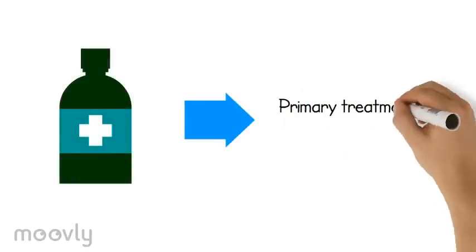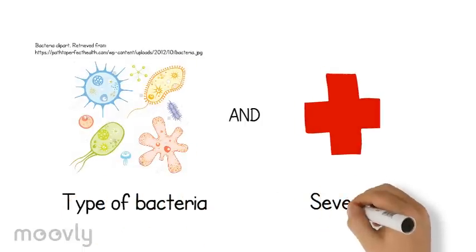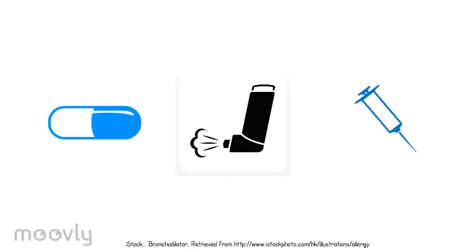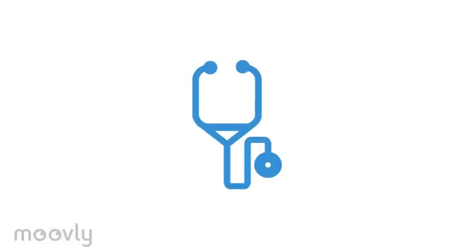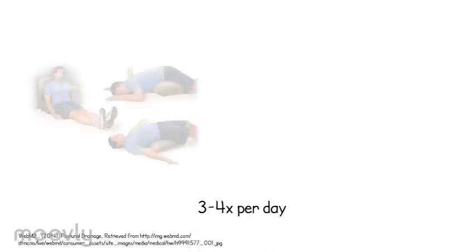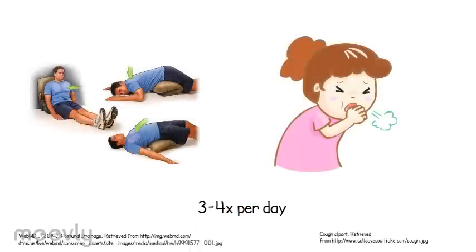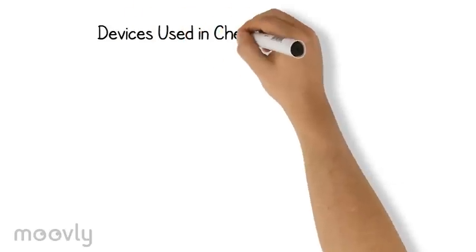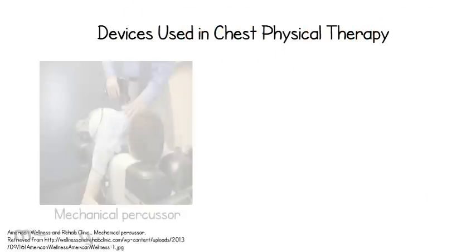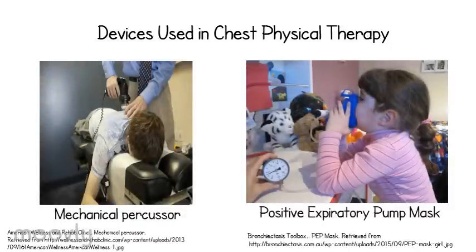Antibiotics are generally the primary treatment for people with cystic fibrosis, as they most likely will have a lung infection. Based on the type of bacteria and the severity of the patient's condition, there are different types of antibiotics that are available, some of which include oral, inhaled, or intravenous antibiotics. A second type of treatment is chest physical therapy, which serves as a way to loosen and remove mucus from the lungs. This should be done three to four times a day, and it involves repeatedly pounding one's chest and back in order to dislodge the mucus. As it might be physically demanding for some people, there are devices such as mechanical percussors or a positive expiratory pump mask, which both serve the purpose of clearing mucus from the airways.